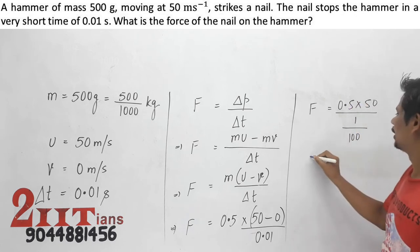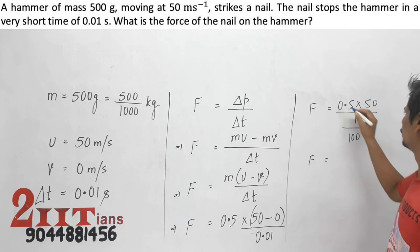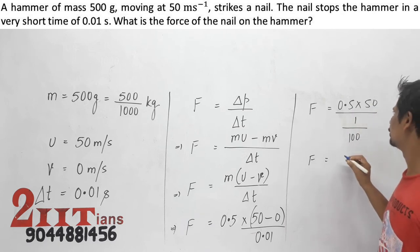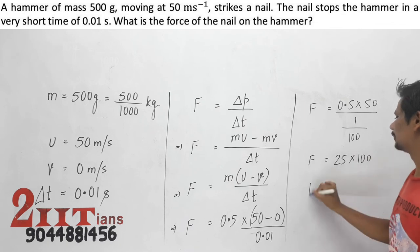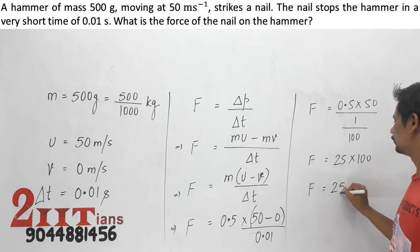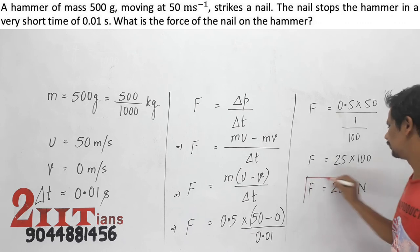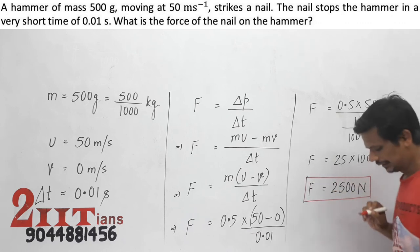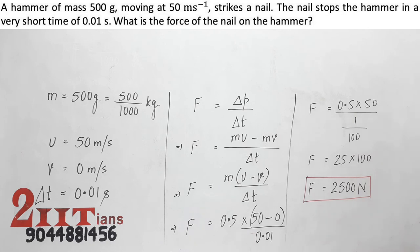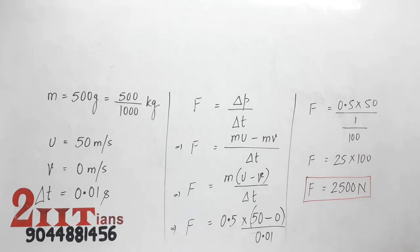F is equal to 0.5 into 50, which is 25 into 100. F is equal to 2,500 Newtons. This is the force which the hammer experiences due to the nail.